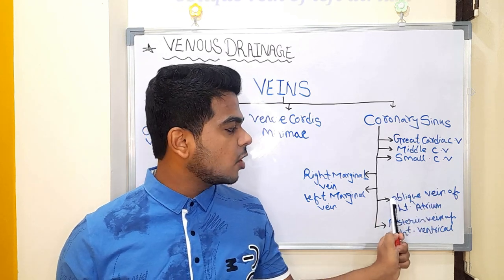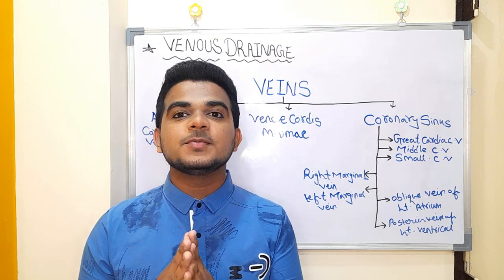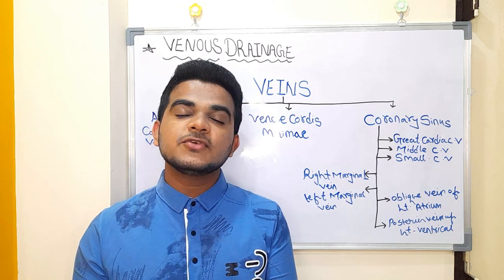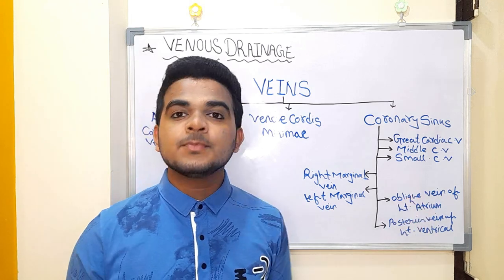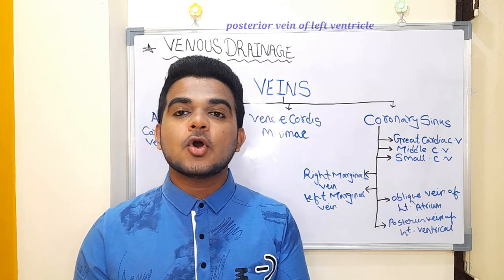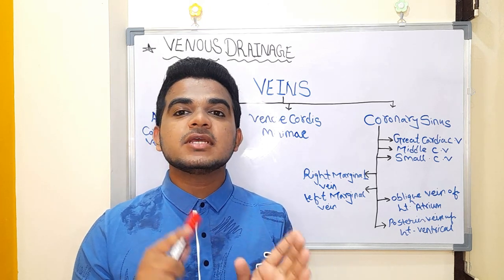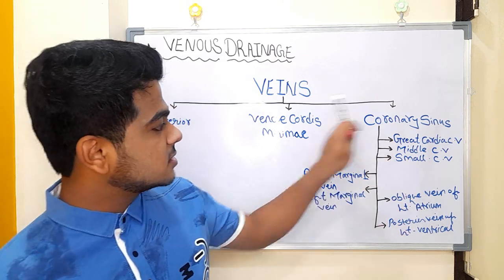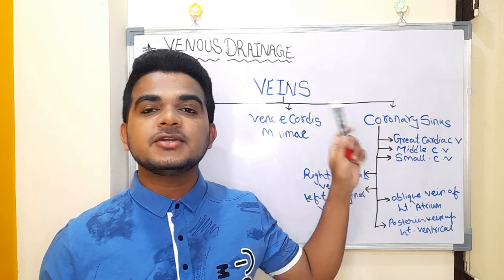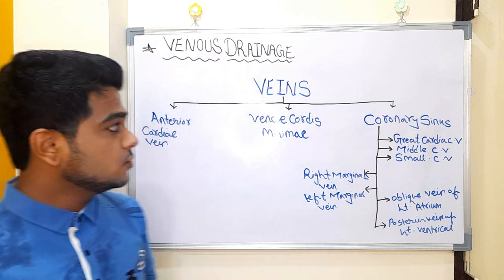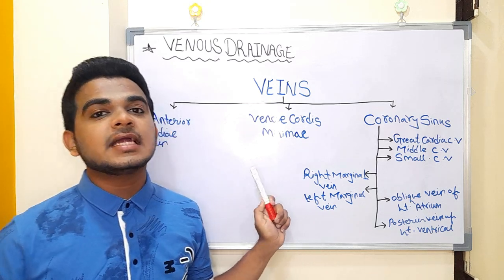The remaining two veins are the oblique vein of the left atrium and the posterior vein of the left ventricle. For the oblique vein — due to its oblique structure, remember it is for the left atrium. For the posterior vein — due to its posterior position going downward toward the ventricular structure, remember it is the posterior vein of the left ventricle. These seven veins all open into the coronary sinus.